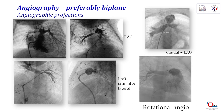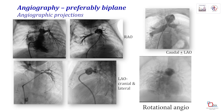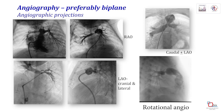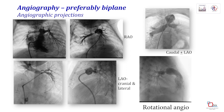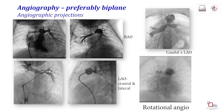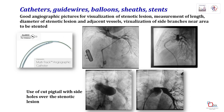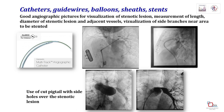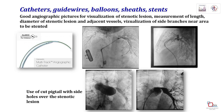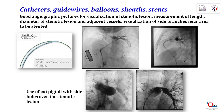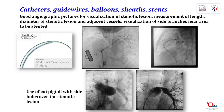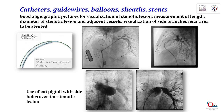Rotational angiography may be helpful when we face difficulty in getting a wire across a tight stenosis in a distorted anatomy. Good angio images are important for detailed assessment of lesions and adjacent vessels, and also help in visualisation of side branches in the vicinity of the lesion to be stented. The multi-track catheter from NUMED is valuable for this purpose.